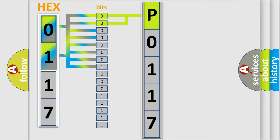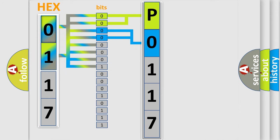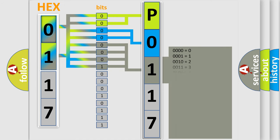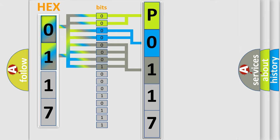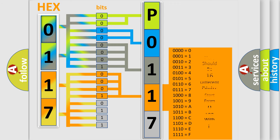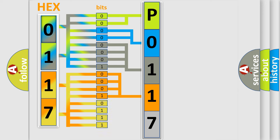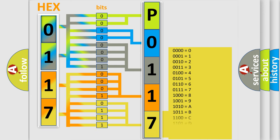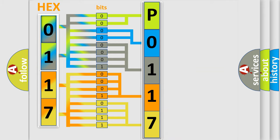The next two bits determine the second character. The last bits of the first byte define the third character of the code. The second byte is composed of a combination of eight bits. The first four bits determine the fourth character of the code, and the combination of the last four bits defines the fifth character. A single byte conceals 256 possible combinations. We now know in what way the diagnostic tool translates the received information into a more comprehensible format.